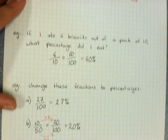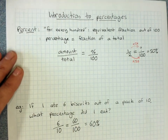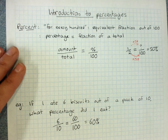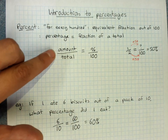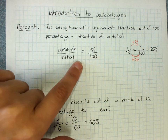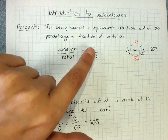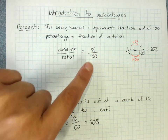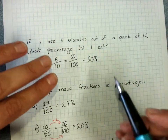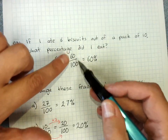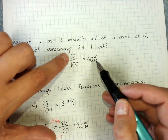That's just a really small introduction to the idea of a percentage. It's always an amount out of a total, and we're changing it to an equivalent fraction of the percentage out of a hundred. And if you've got a fraction out of a hundred, that's the same as a percentage.